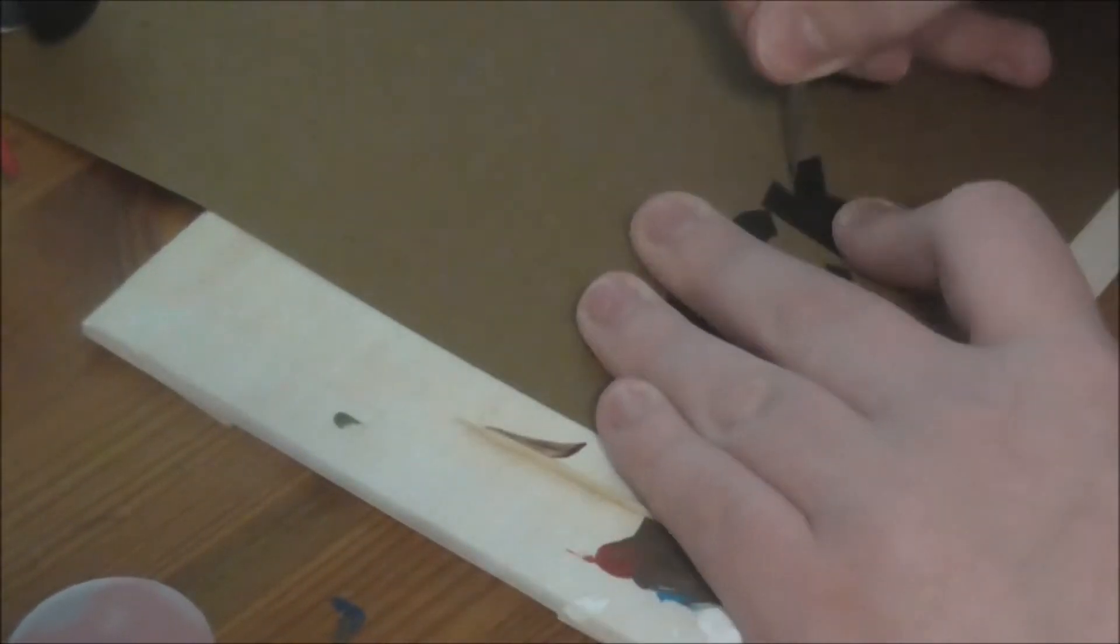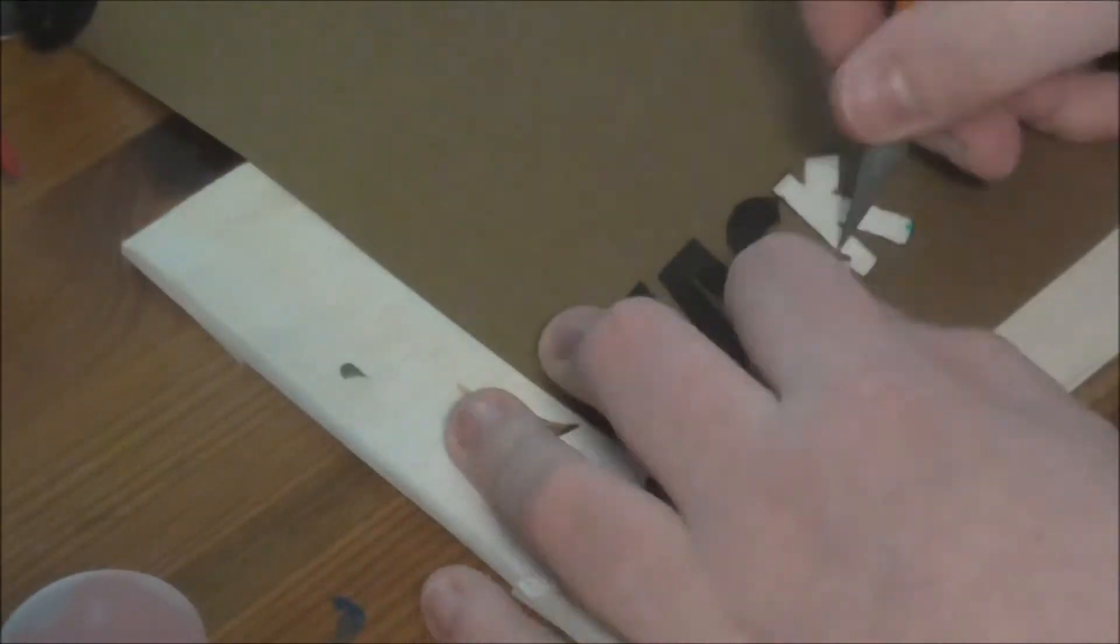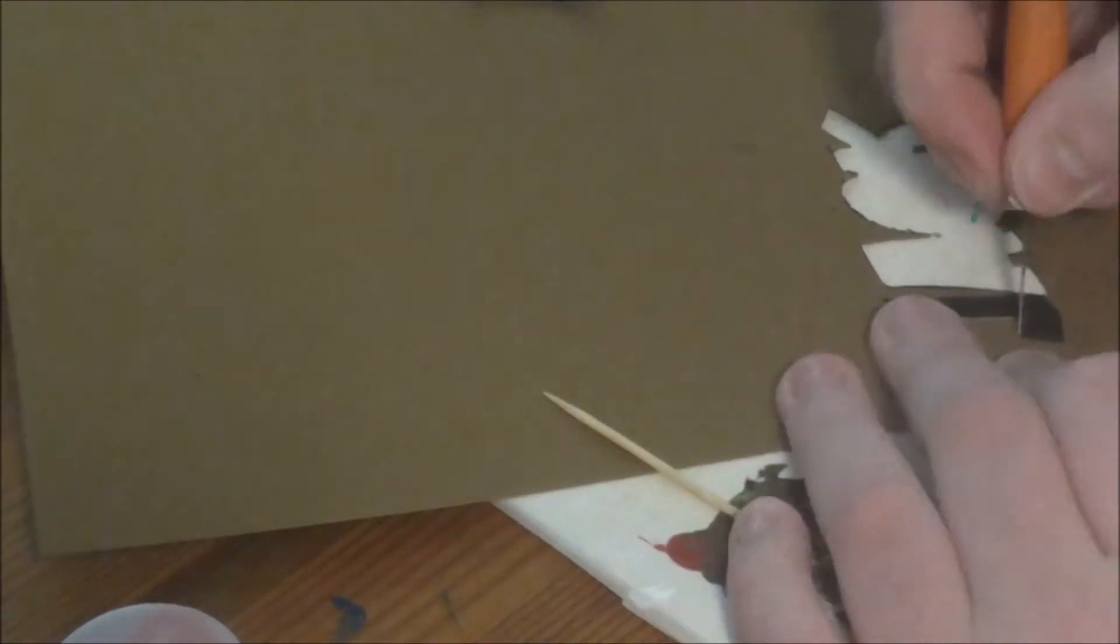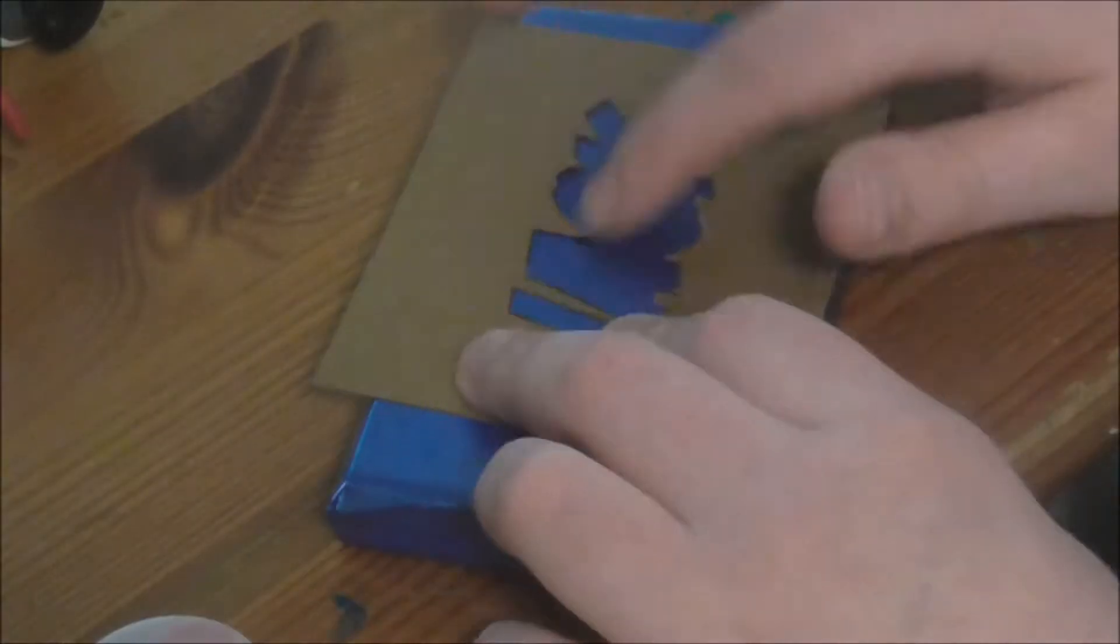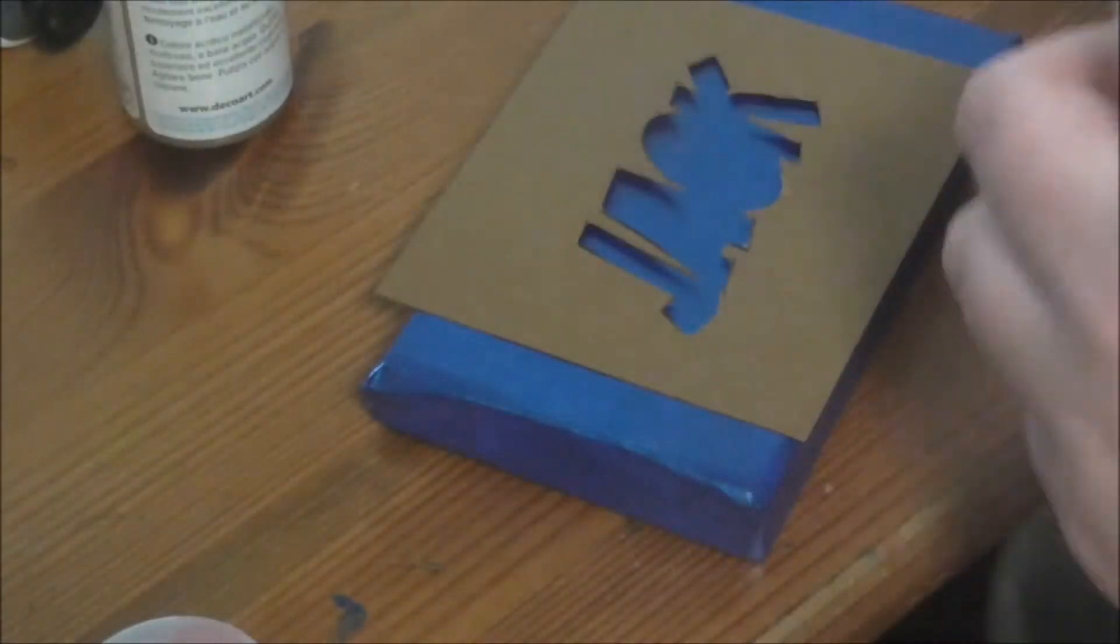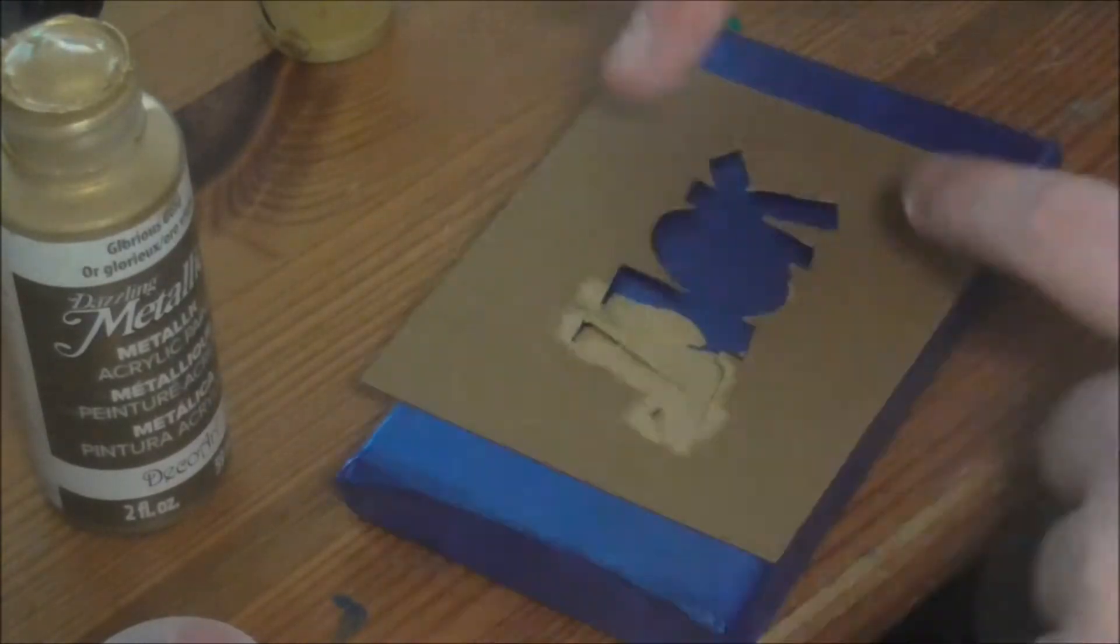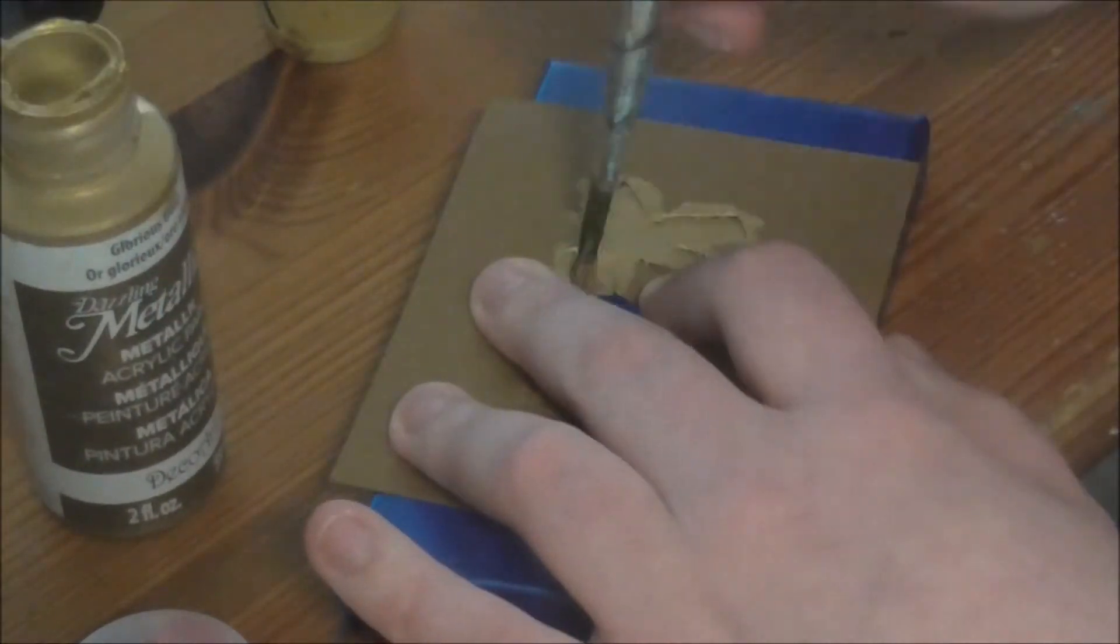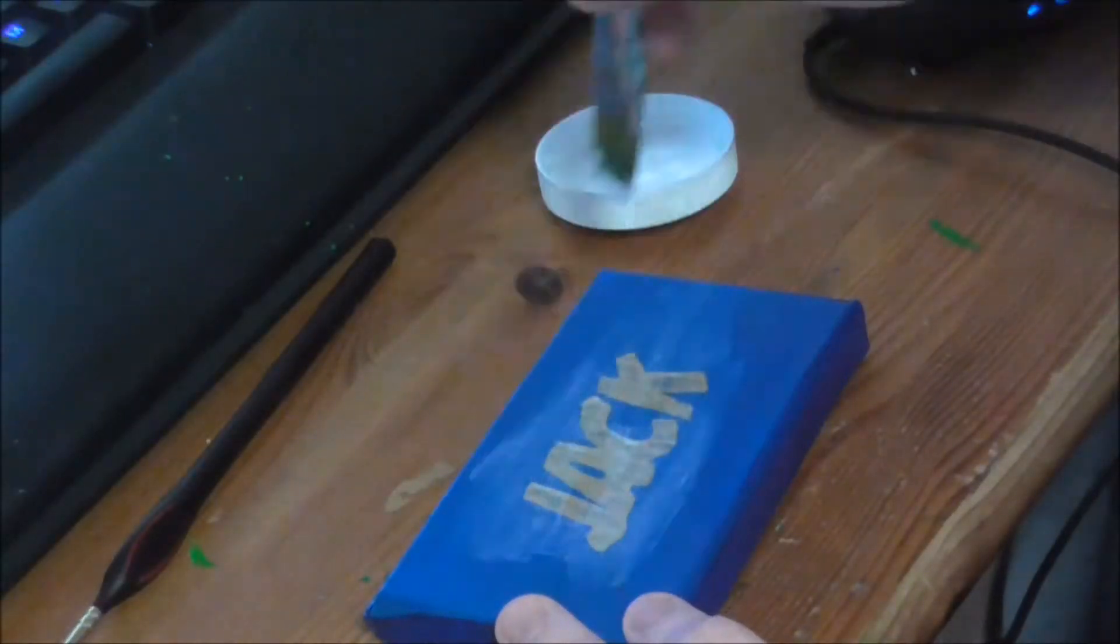While the sealant dried, I cut out Jack's name in a font that he's a fan of to create a stencil. Then use the stencil to paint his name onto the lid of the box and sealed that in as well.